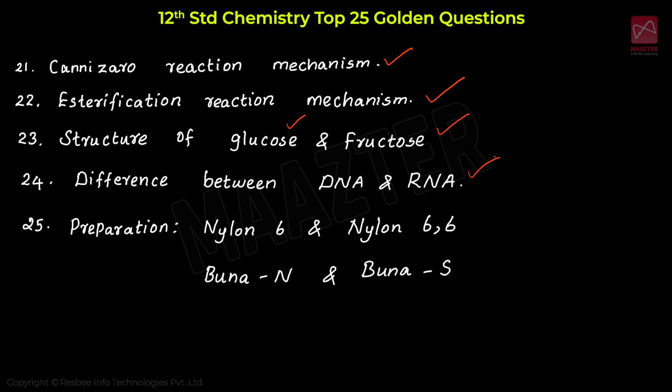Then Unit 15, chemistry in everyday life: the important questions are the preparation of Nylon 6 and Nylon 6-6, and the preparation of BUNA-N and BUNA-S rubber. These 2 questions are very important and golden questions from Unit 15.